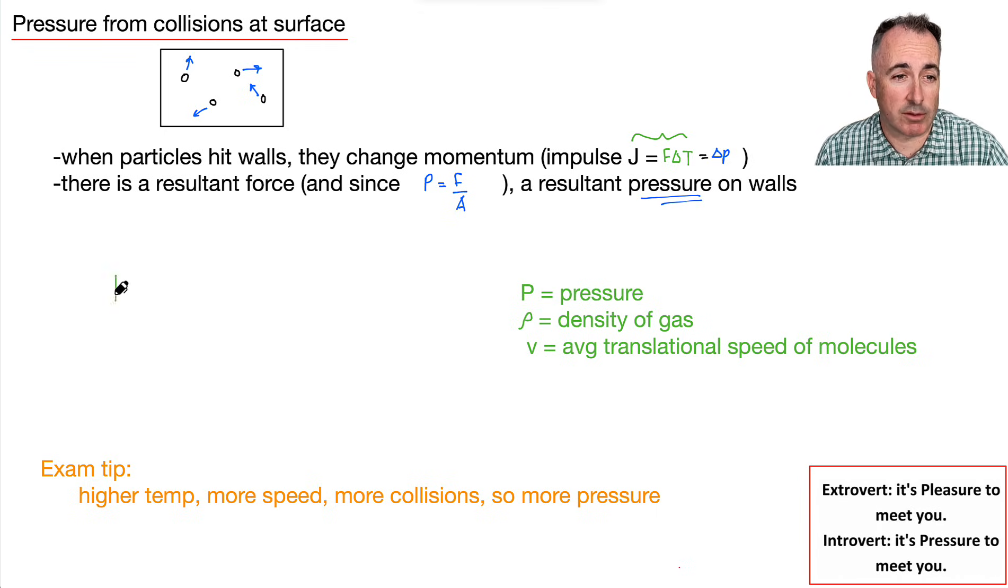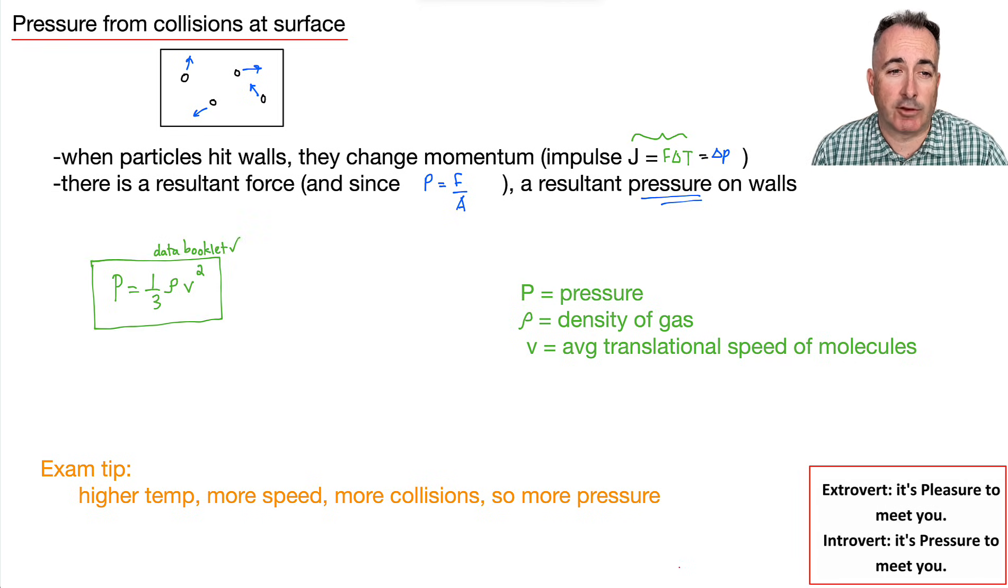And that's what we can define from our data booklet. It goes P equals one third times rho times V squared. It's important that we define everything here. This P is pressure, measured in pascals. Density of a gas, that's mass over volume, so kilograms per meter cubed.